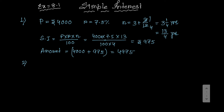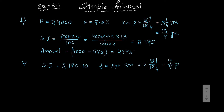Now move on to the next sum. What sum of money will yield rupees 170.10 as simple interest? Here simple interest equals 170.10, for time two years three months — that means two and 3 by 12, which gives one by four, so 9 by 4 years.